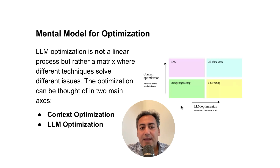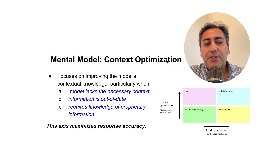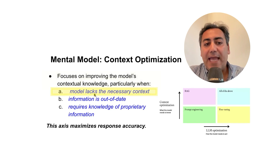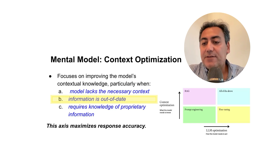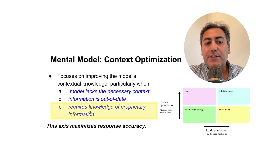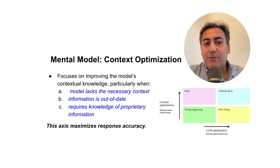On the right-hand side you can see this matrix with two axes: one is LLM optimization and the other is context optimization. When we go to optimize an LLM, we look at both axes. Context optimization focuses on improving the model's contextual knowledge — particularly when the model lacks necessary context, such as information not in its training data set, when the LLM's information is out of date, or when the LLM requires knowledge of some proprietary domain. In that case, we optimize context.